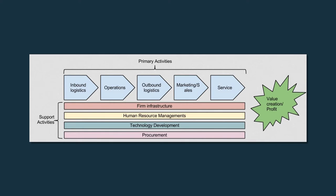The primary activities consist of inbound and outbound logistics, operations, sales and marketing, and service. The support activities include firm infrastructure, human resource management, technology development, and procurement.